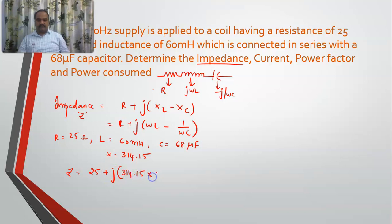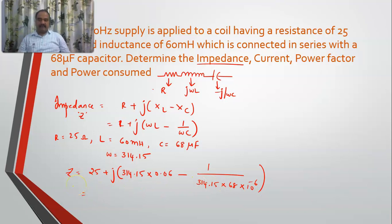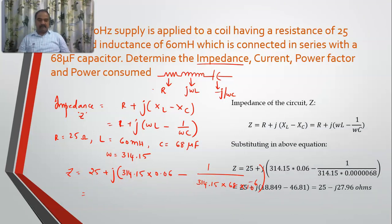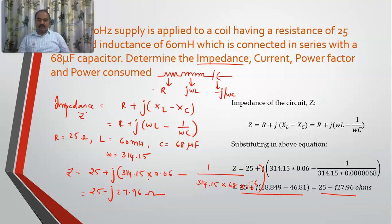When you substitute all these values, you get the equivalent value of the impedance. The result is approximately Z = 25 − j27.96 ohms in rectangular format. If you want to convert it into polar format, you apply the polar conversion using your calculator.